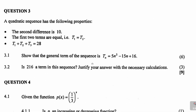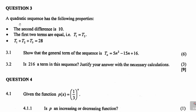Let's look at question number three. It says: a quadratic sequence has the following properties — the second difference is 10, the first two terms are equal (t1 equals t2), t1 plus t2 plus t3 is equal to 28, and we need to show that the general term is given, and determine whether 216 is a term in the sequence, justifying the answer with calculations.